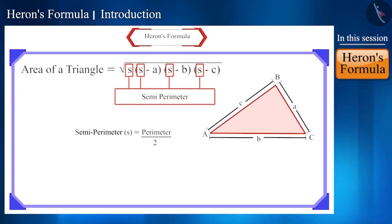If the length of the sides of a triangle ABC are A, B and C respectively, then its semi-perimeter is S equals A plus B plus C divided by 2.